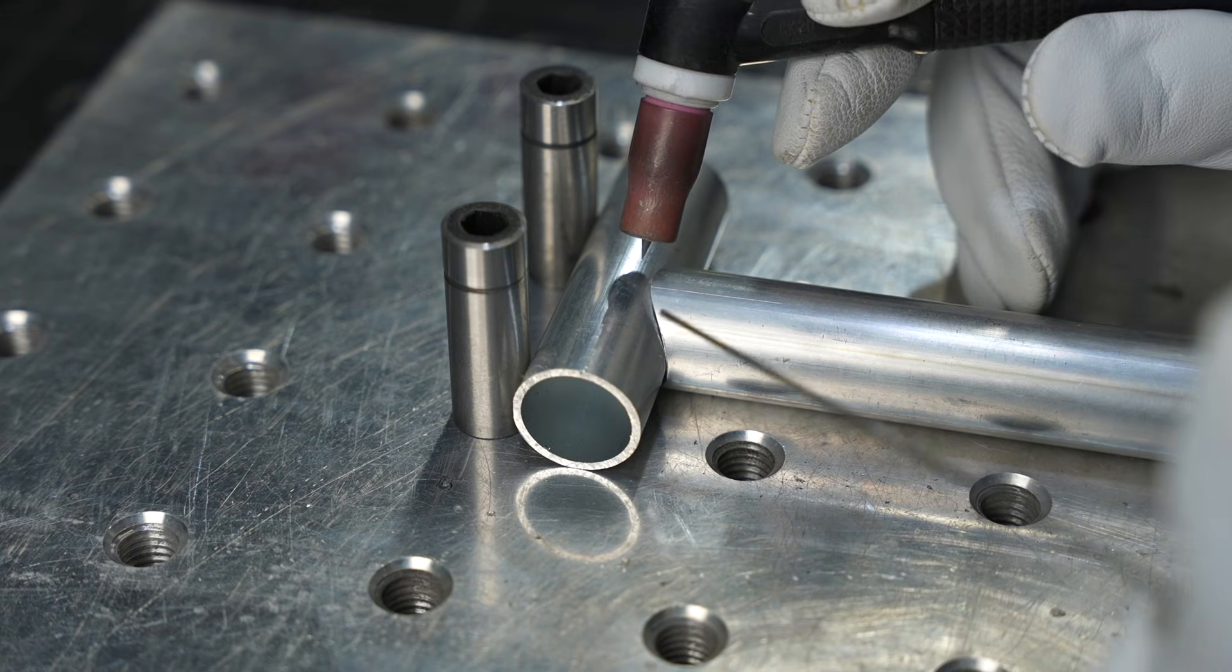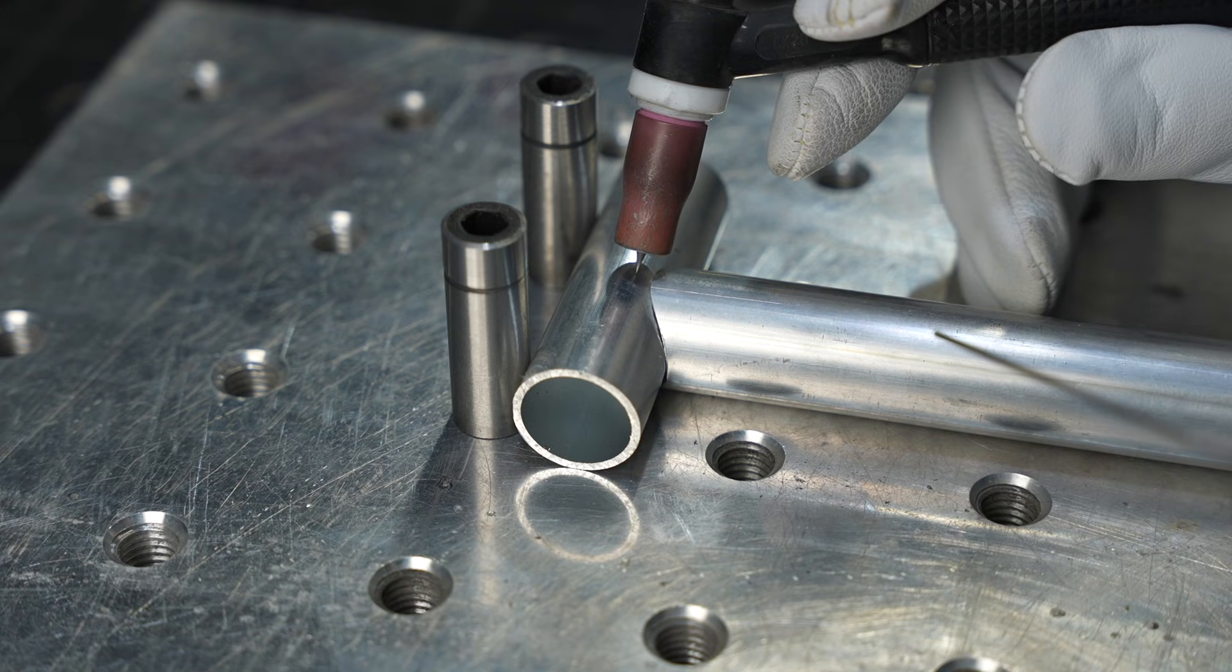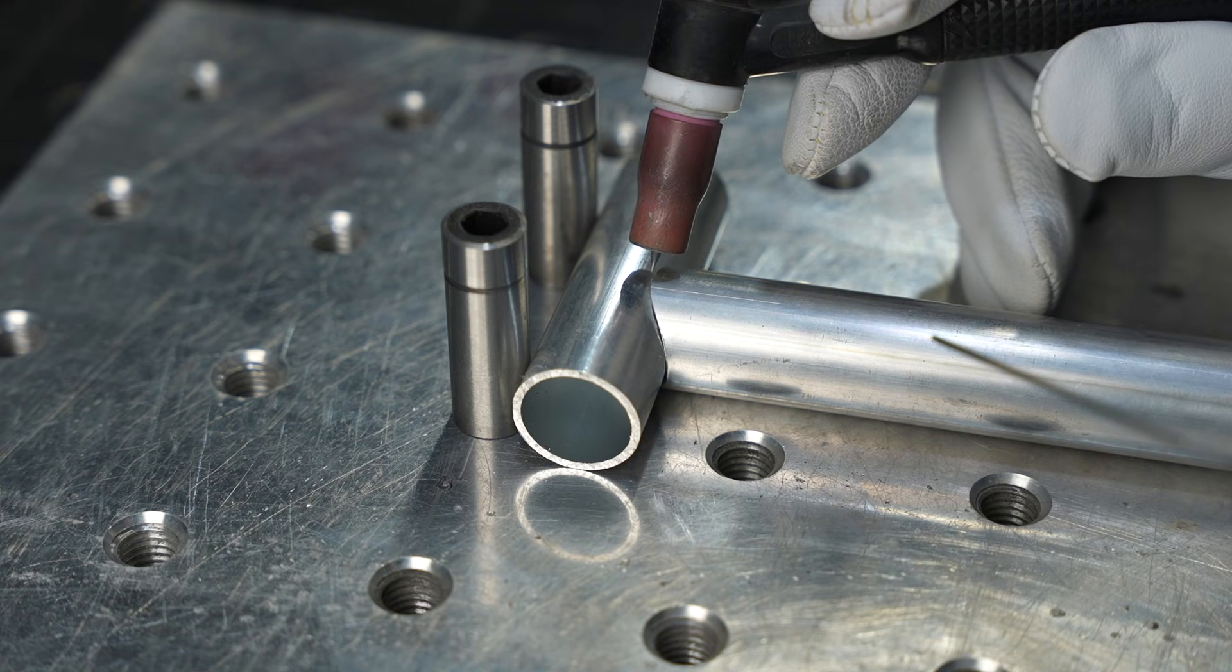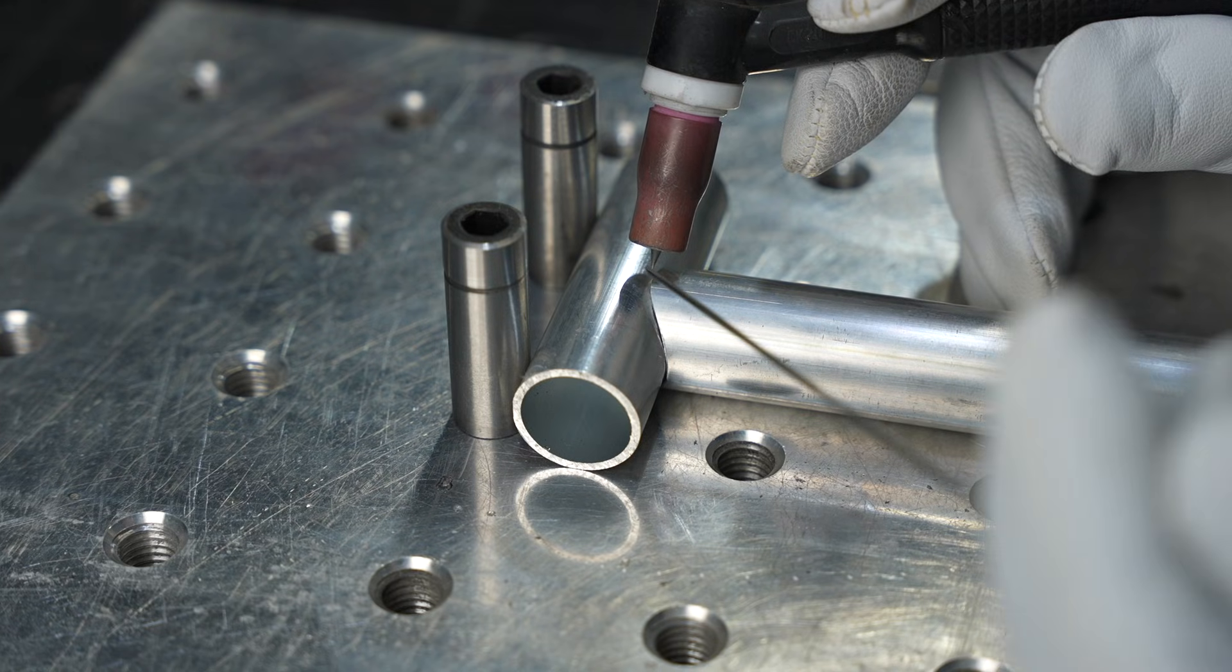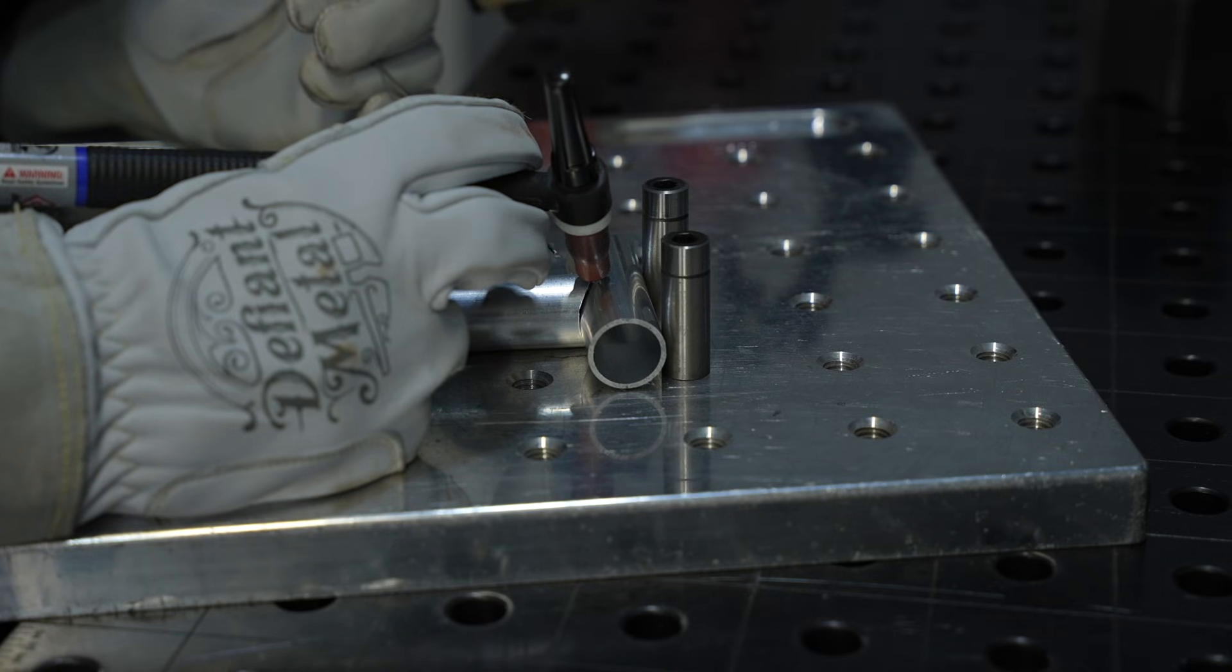And so the technique here is to start, ease on the pedal with the tungsten biased towards that flat side, and then move in towards the edge till you see a puddle on both sides, and then dab with some filler metal just to bridge that gap and fill it in. So let me show you how that looks.